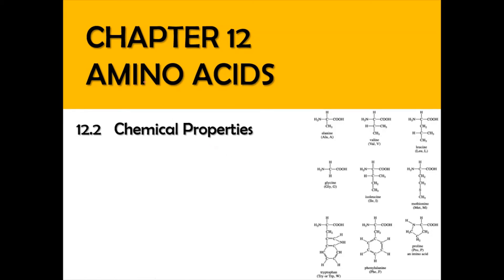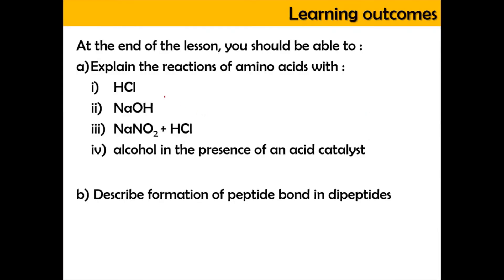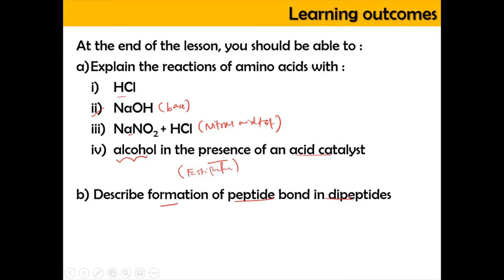Hi, assalamualaikum and a very good morning. Today we're going to do chapter 12 which is amino acids, and we're going to focus on topic 12.2 which is the chemical properties of the amino acid. In this video we're going to explain the reaction of amino acid with HCl and sodium hydroxide acting as the base, the reaction with sodium nitrite in HCl — the nitrous acid test — the reaction with alcohol in the presence of an acid catalyst known as esterification, and the formation of peptide bonds in a peptide. So without any further ado, let us start.